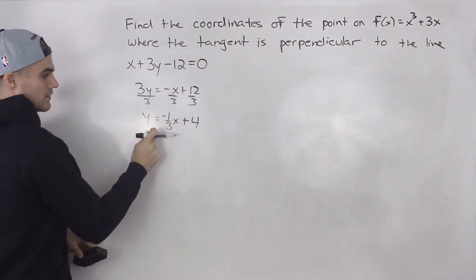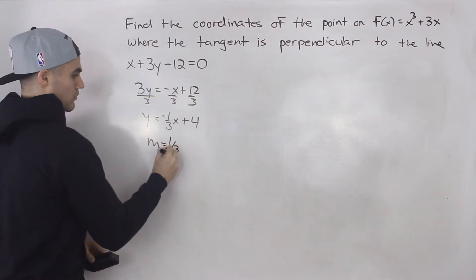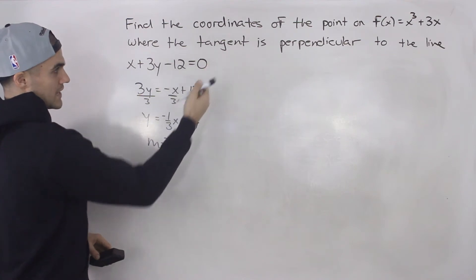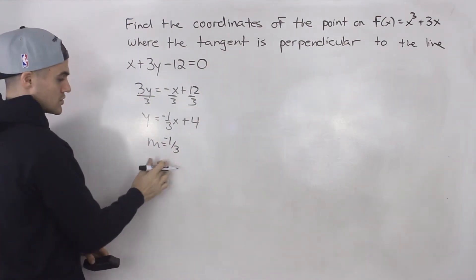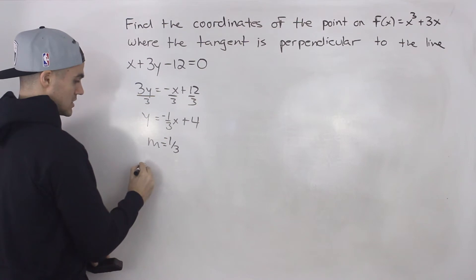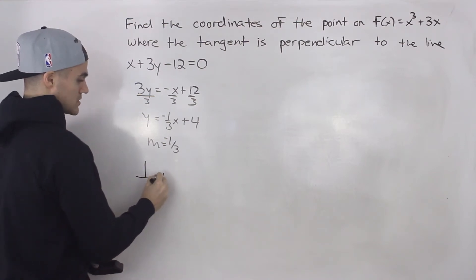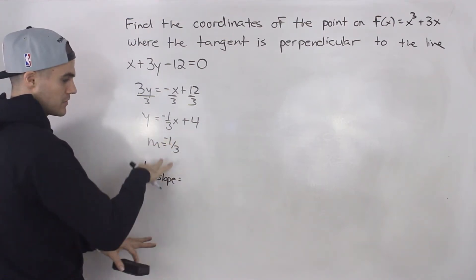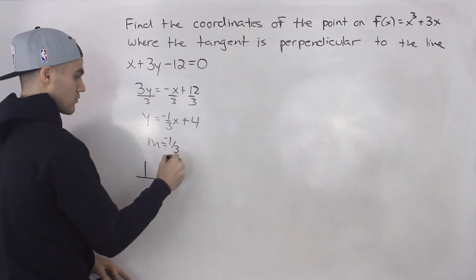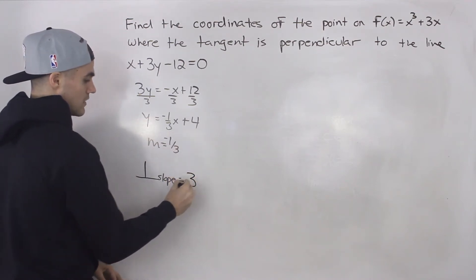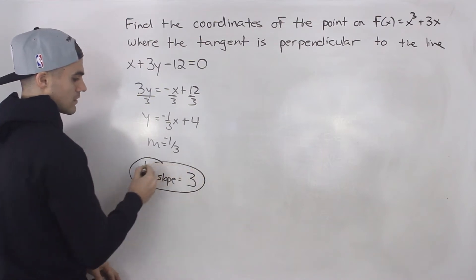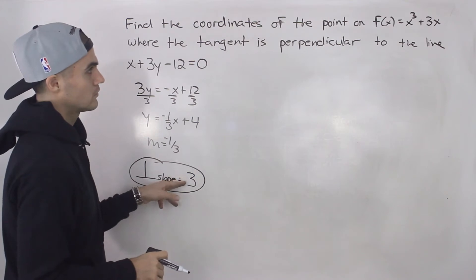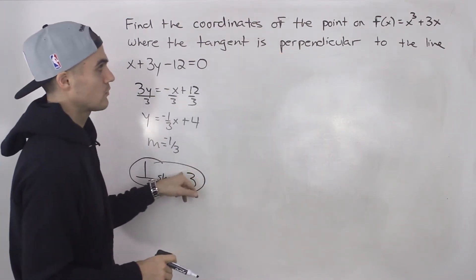So this line here has a slope of -1/3. But we're trying to find the point where the tangent is perpendicular to this line. So if the tangent is perpendicular to that line, what's the perpendicular slope going to be? Well, it's going to be the negative reciprocal of that. So we flip this and change the sign. So 1/3 is like 3/1. Change the negative to a positive. So we know that the tangent slope is going to equal 3.